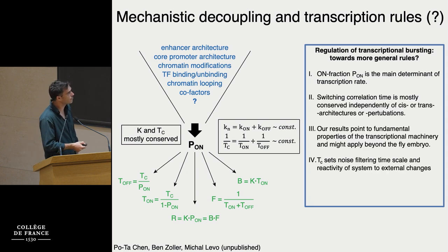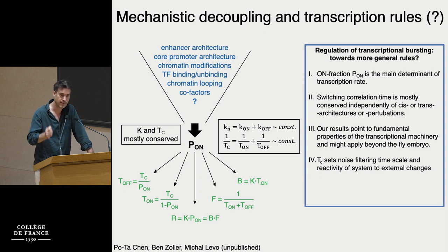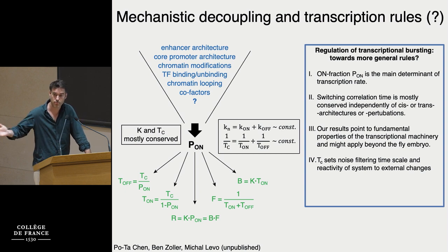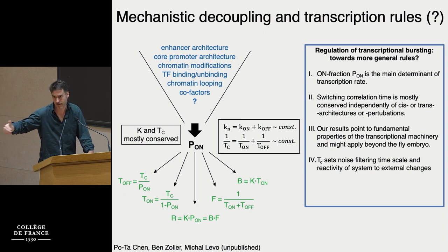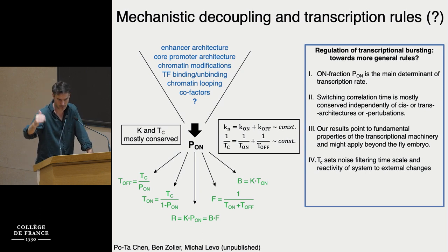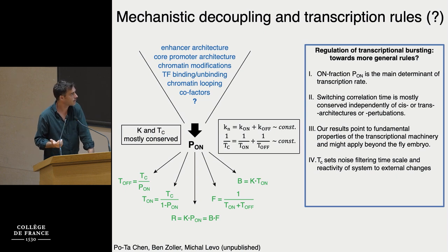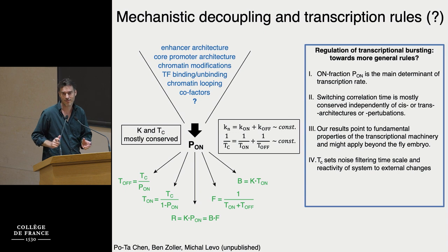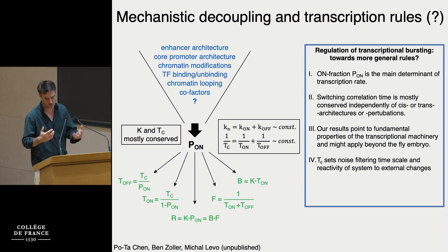One last word on the switching correlation time and what it means for development. The fact that it is small is actually a good thing — transcription is noisy, bursts are very noisy, but you want this timescale to be small because you want to filter noise. If this timescale were at the developmental level, we would never be able to differentiate a cell in time. Being almost an order of magnitude smaller helps you become precise and reproducible. And if there is an acute change the system has to react to, transcription being a minute-timescale process helps for reactivity and switching transcription programs.